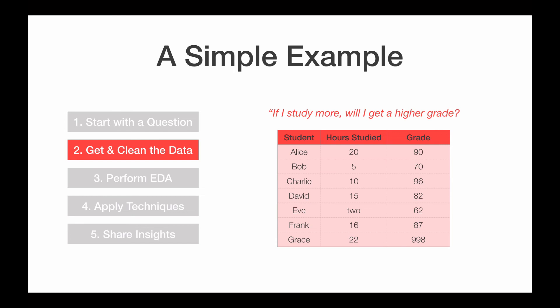Does anyone notice anything a little off with this data? You probably see that Eve studied two hours, T-W-O, and then Grace has a typo in her grade. And so at this point, after you get the data, you also want to clean it. And in those two cases, I am going to replace that with data that I think actually makes more sense. Alright, so we've cleaned the data.